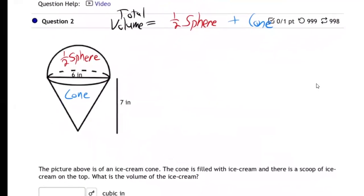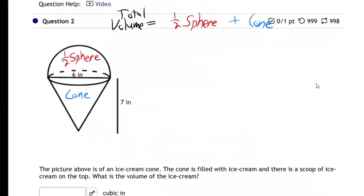Okay, we have a half a sphere, so we're going to have a half times four thirds pi r cubed.